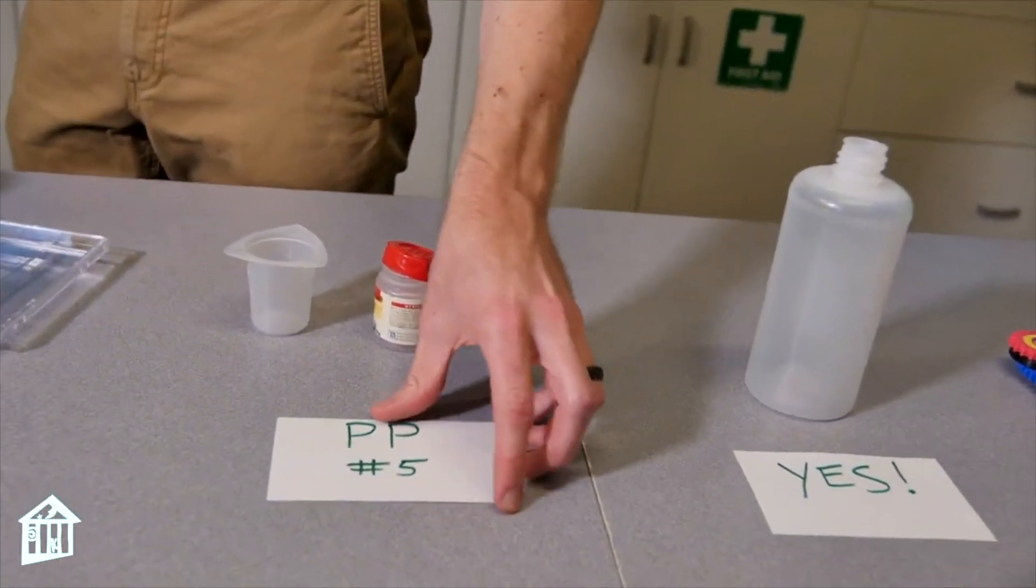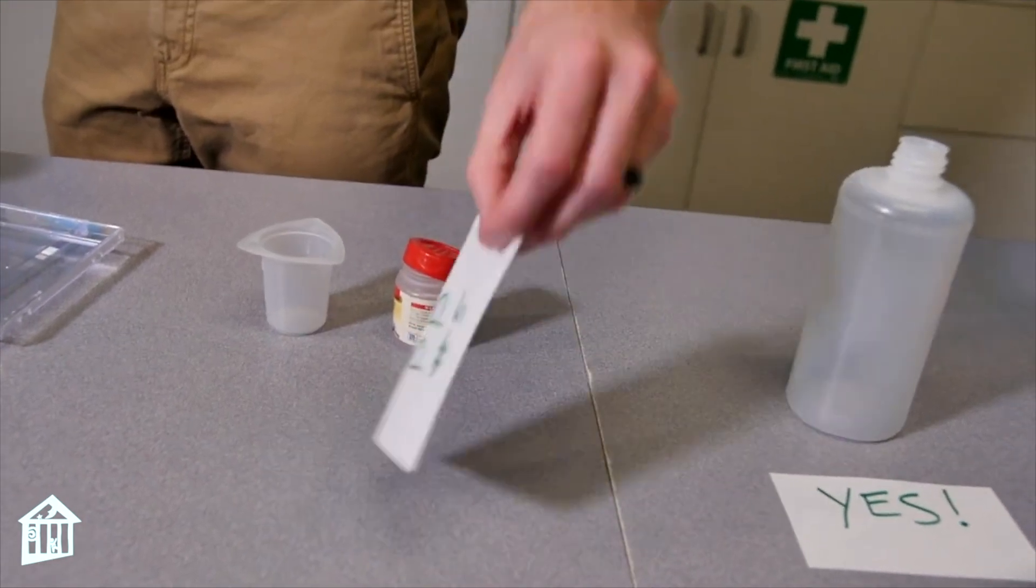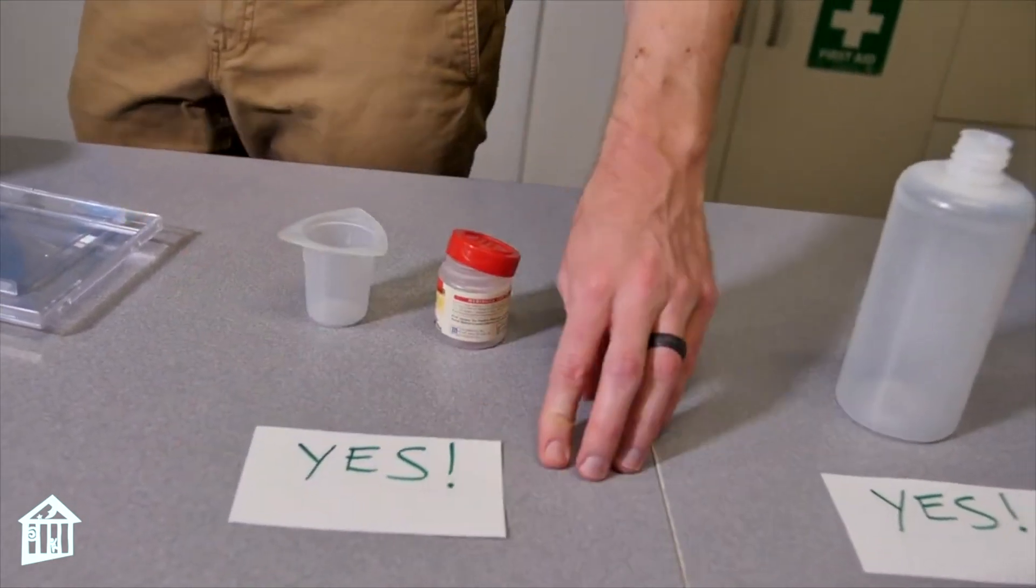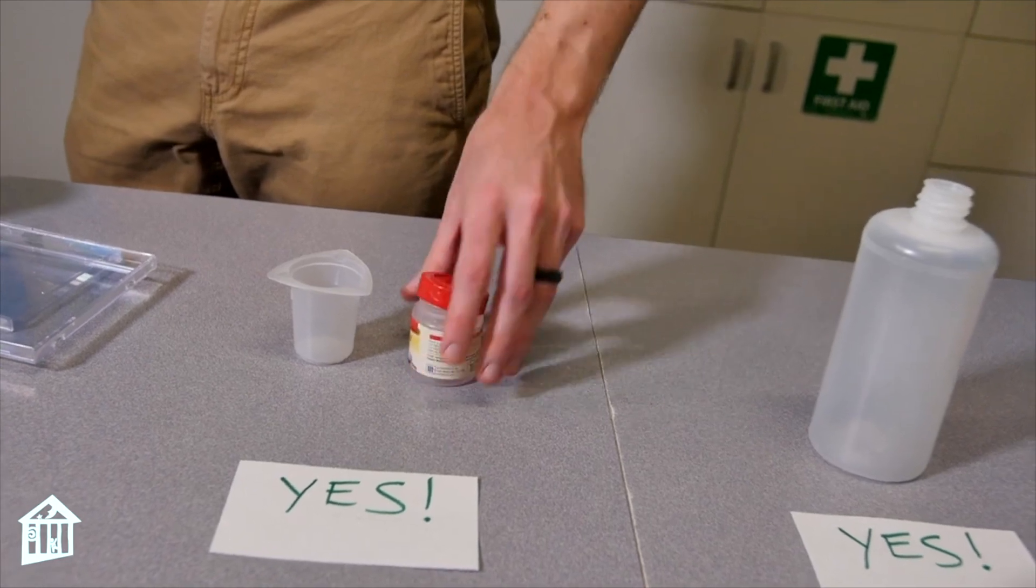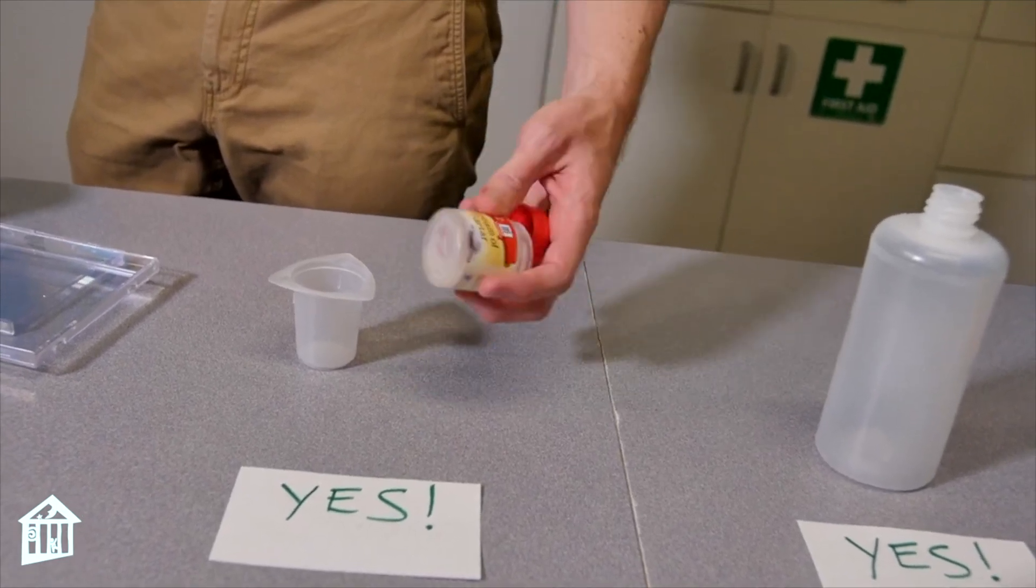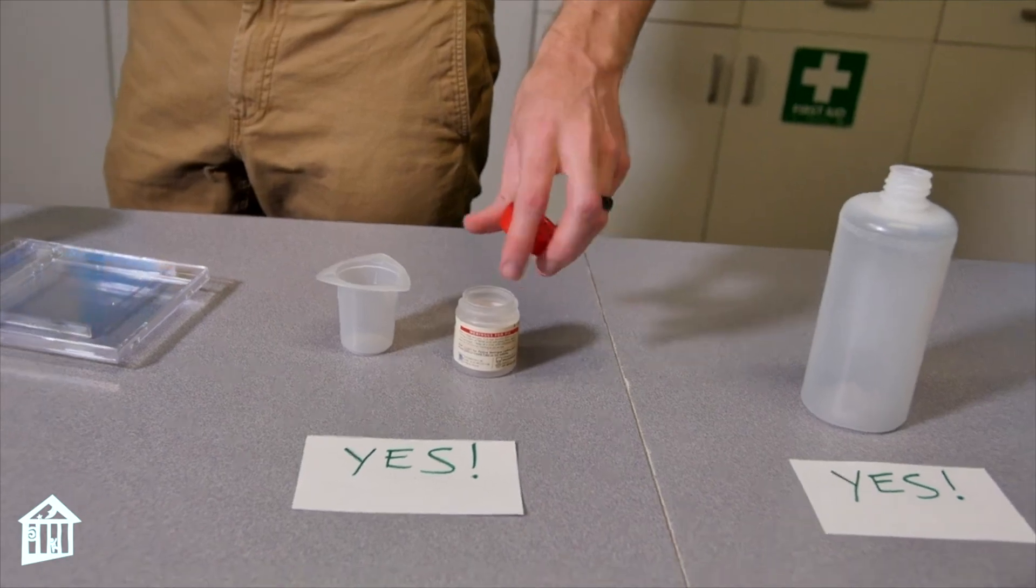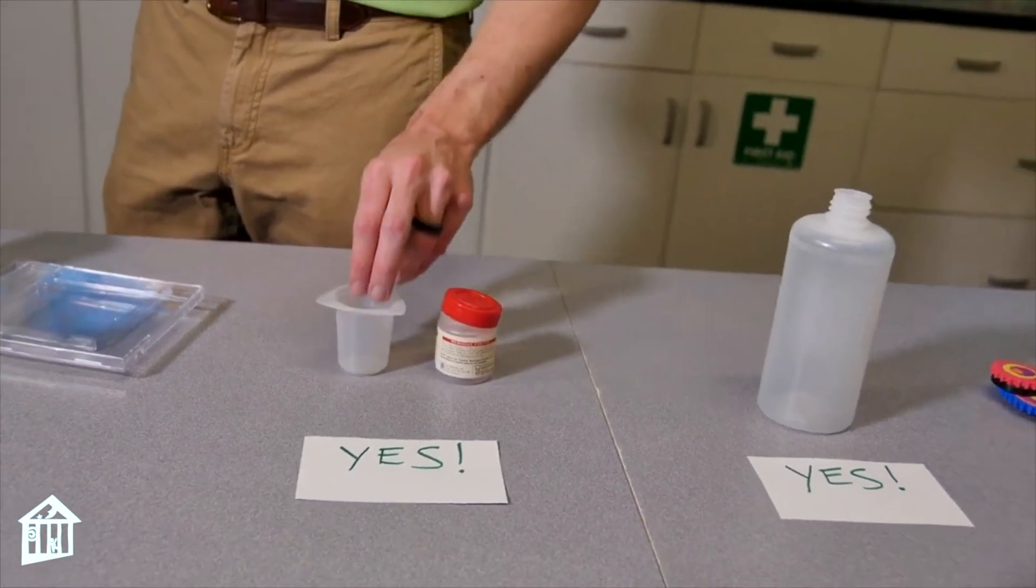So then we have our polypropylene and it is recyclable. And so these are a little more flexible and durable and heat resistant. And this includes some lids, yogurt tubs, and even bottle caps.